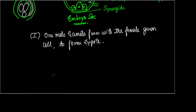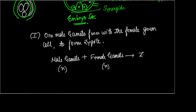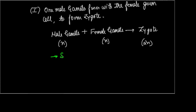In equation form: male gamete (n) + female gamete (n) → zygote (2n). This first fusion is called syngamy. Syngamy is the fertilization between the male gamete and the female germ cell — the fusion of the male and female germ cells to form a zygote. So syngamy is the first step.